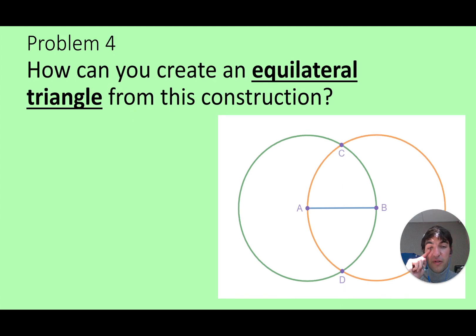What if I want an equilateral triangle? What can I do? Same original setup, but I'll connect B to C, A to C. Oh yeah, that's going to be our perfect equilateral triangle.